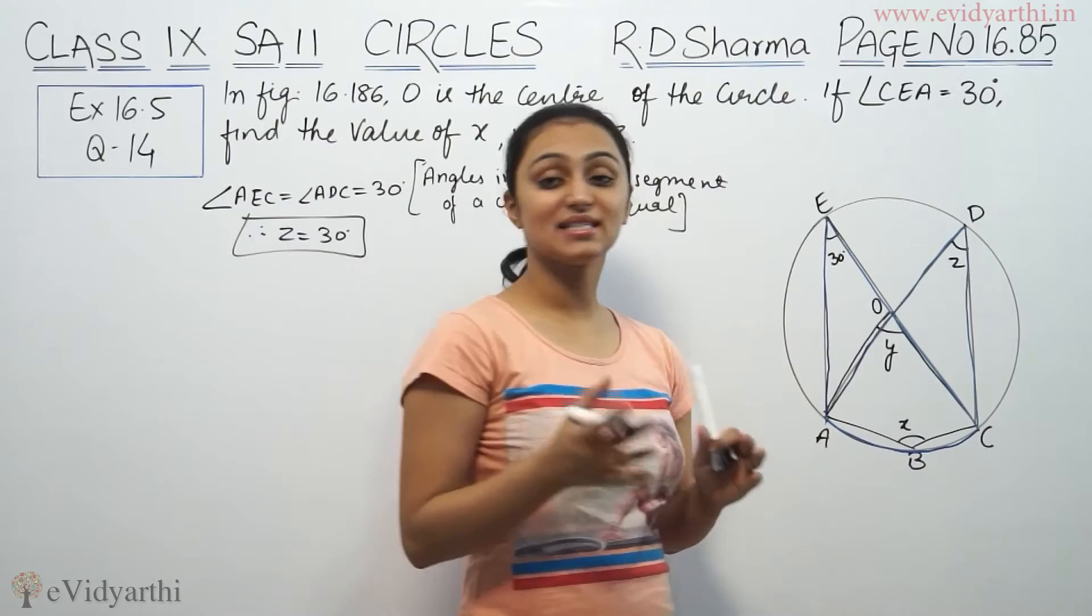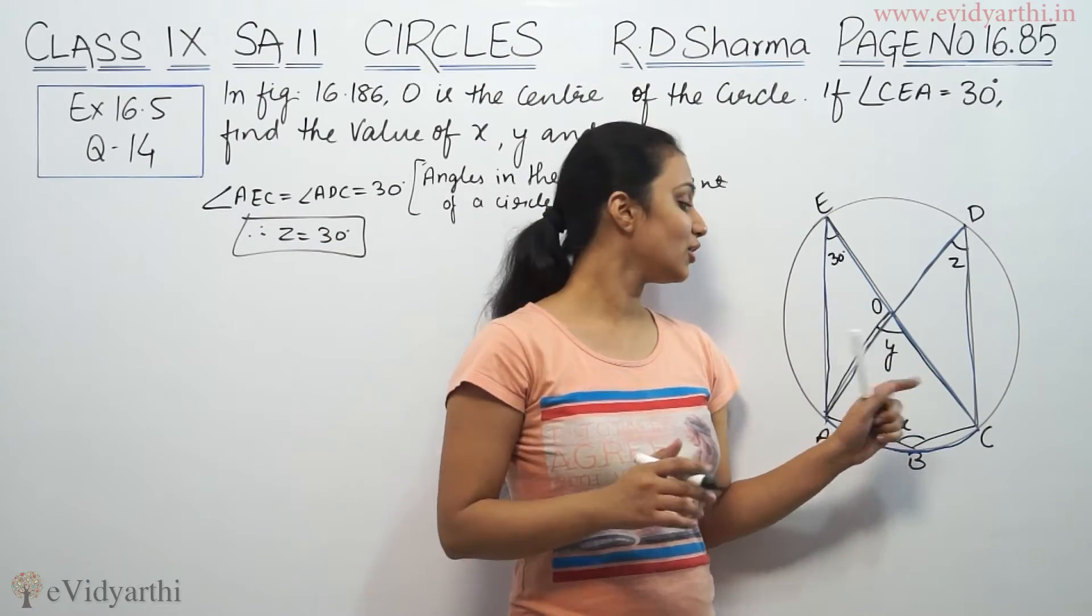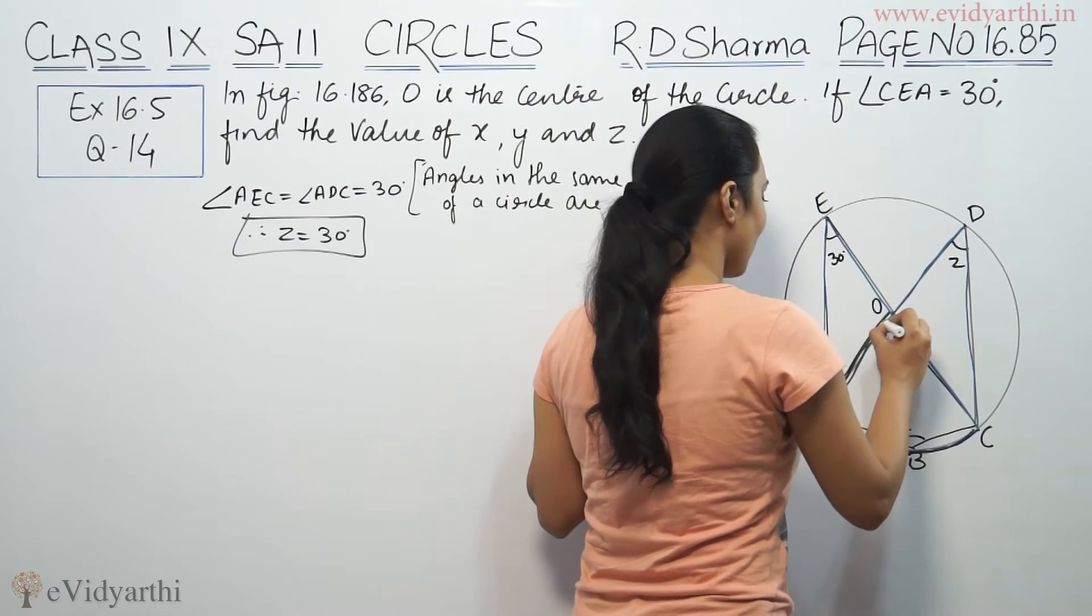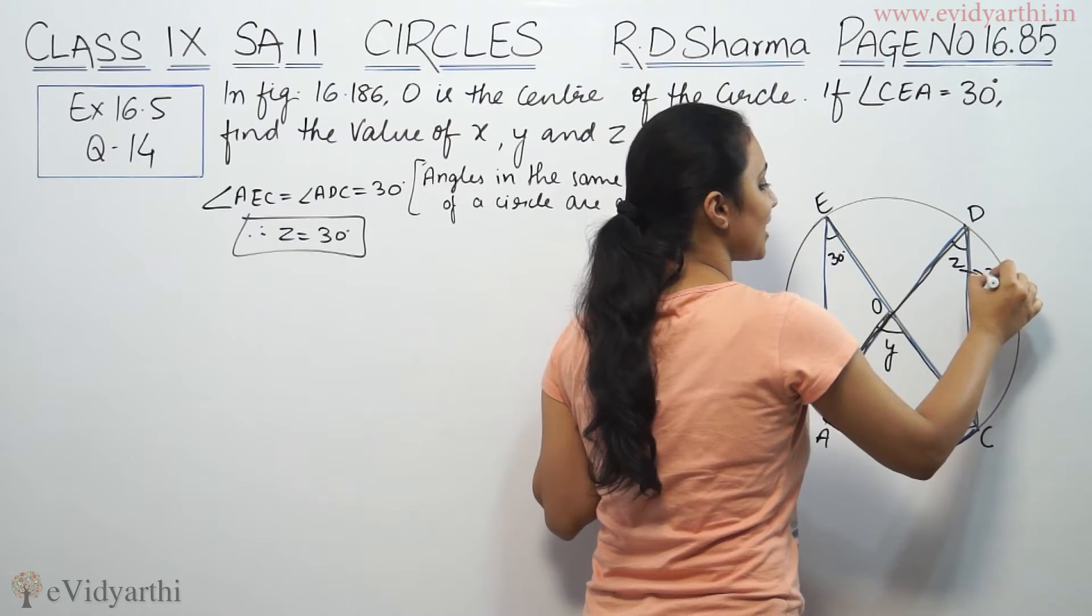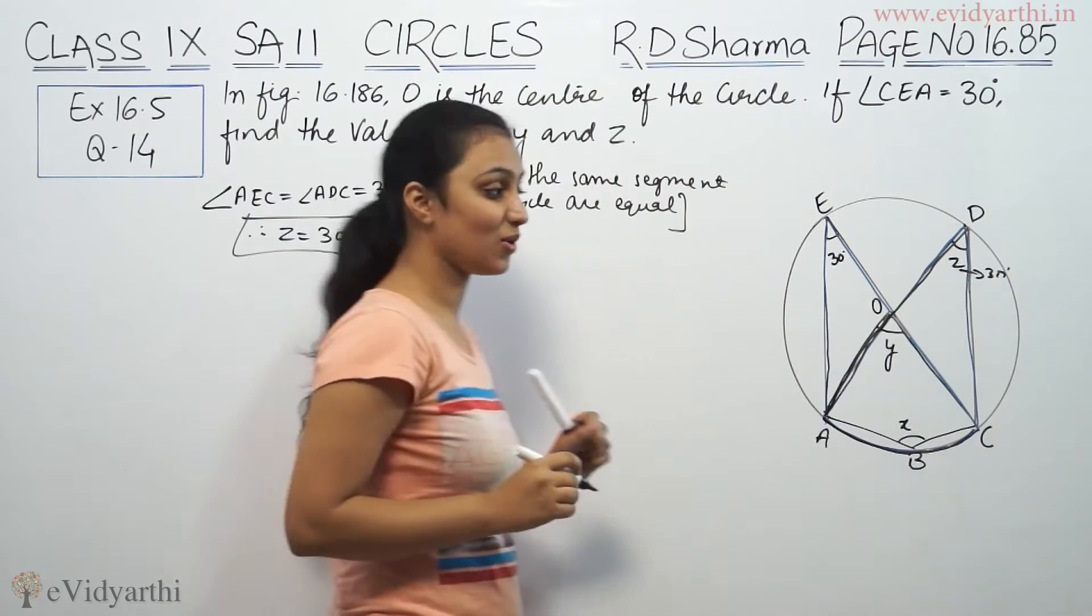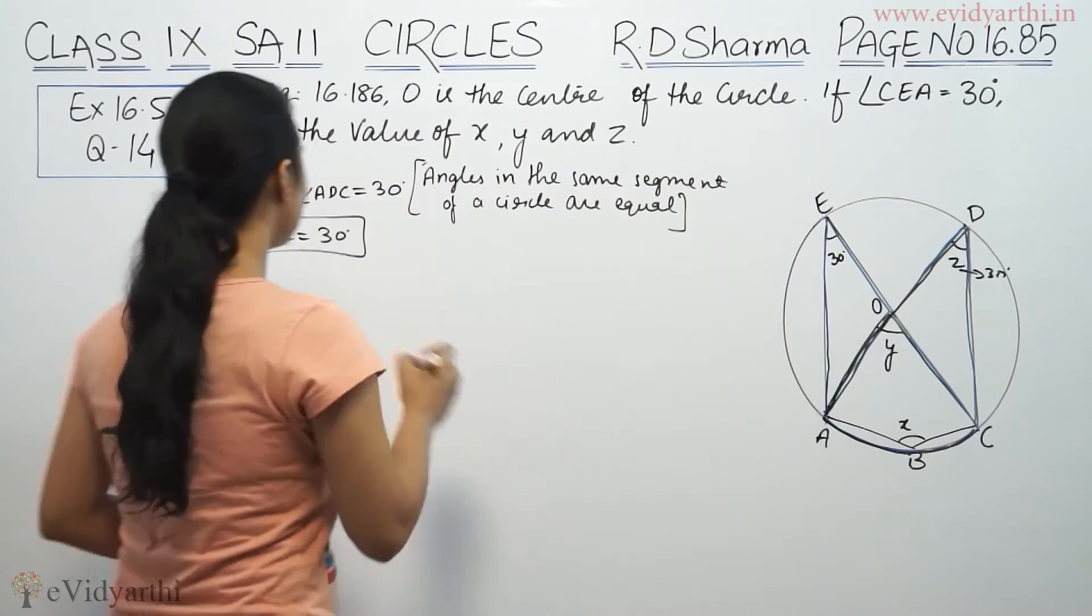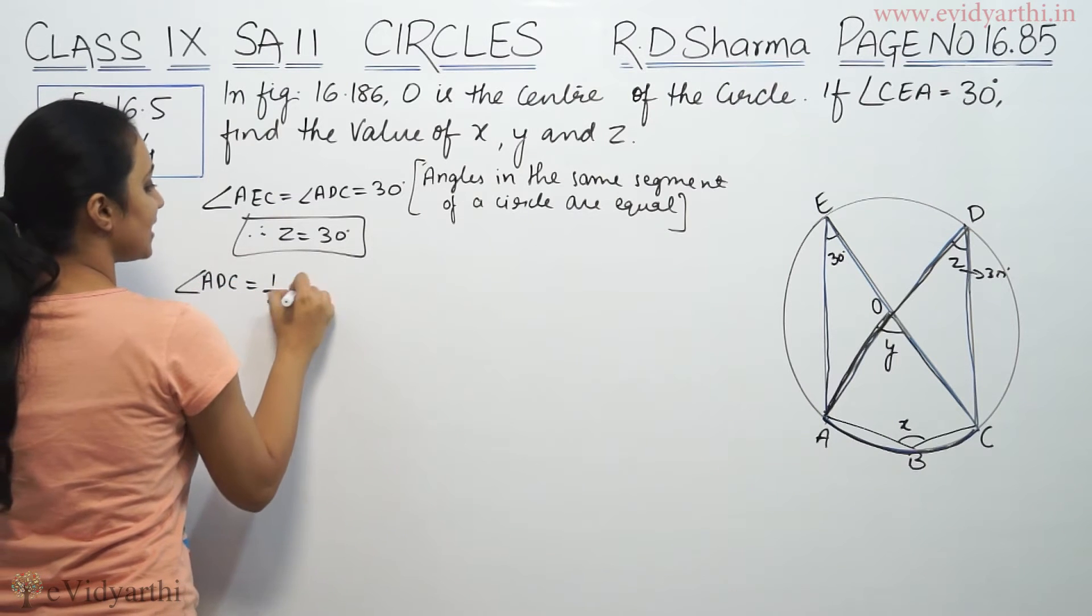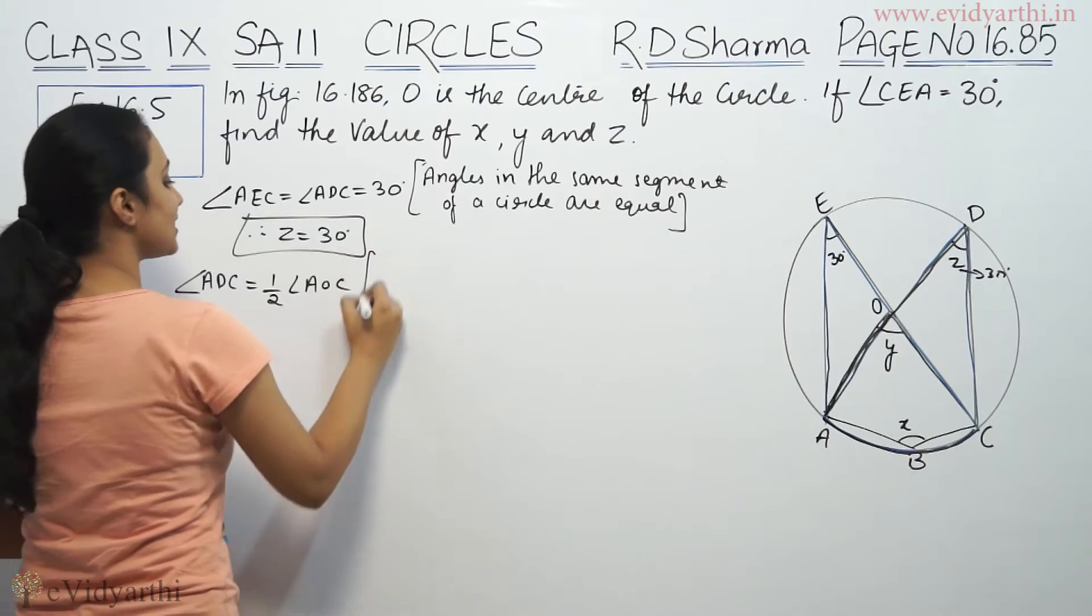Now we know that if the same arc subtends angles at the center and at the circumference, the center angle is double. So if you see, this angle from the center is Y, and here angle Z is formed. Z's value is half of it, so Y will be double. The reason we'll write is the angle subtended...